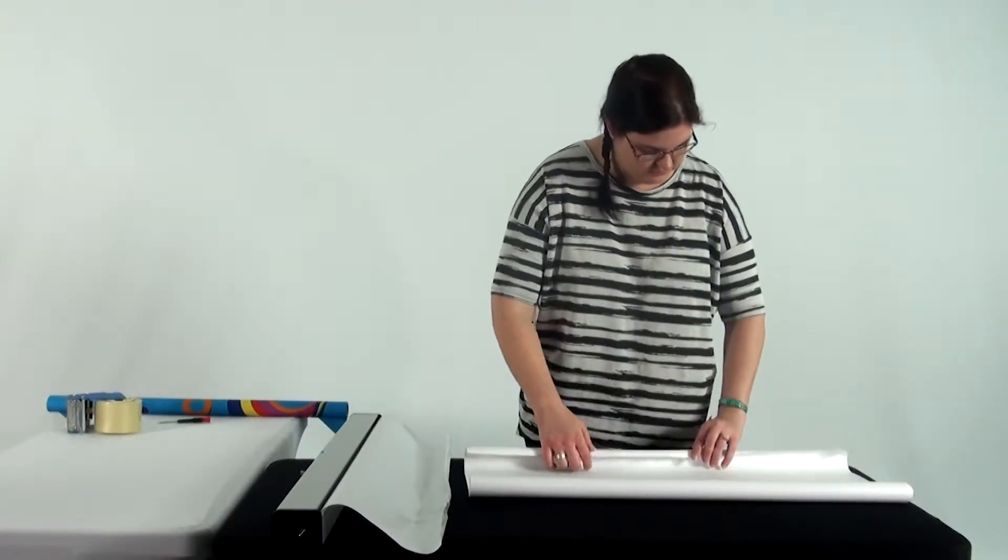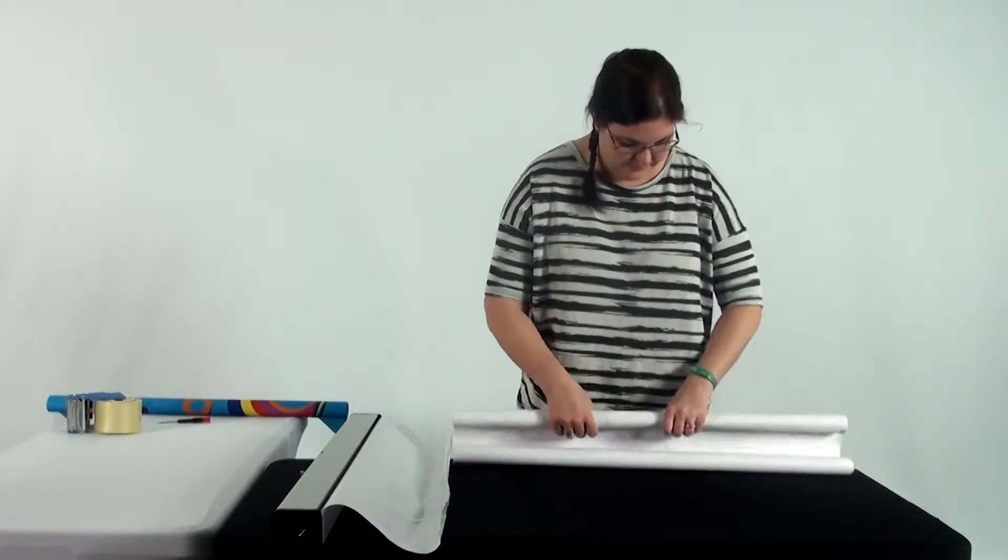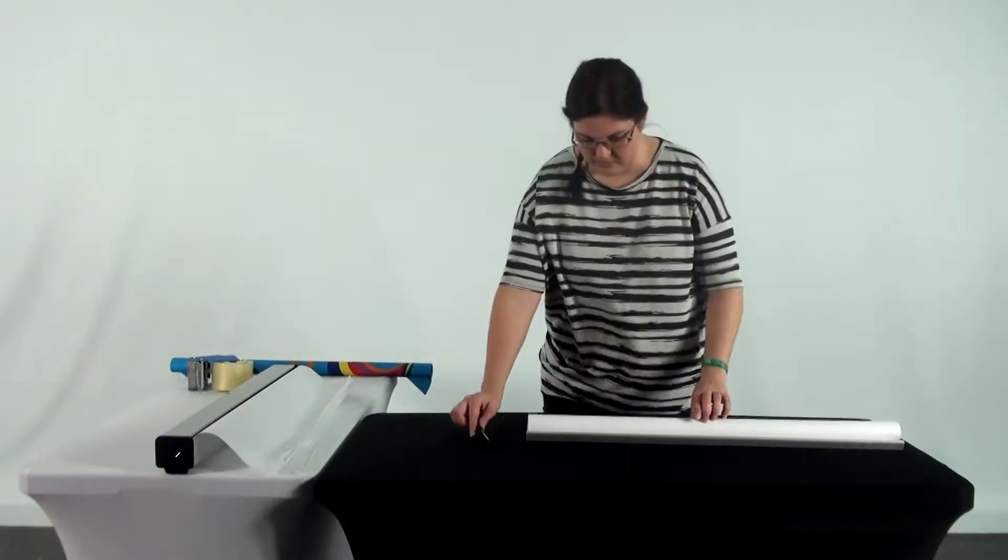With the banner detached from the base, roll it up starting from the bottom. When you get to the top where the top clamping rail is, grab a flathead screwdriver.